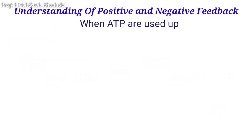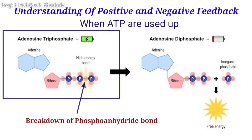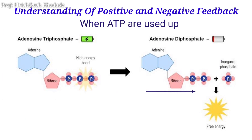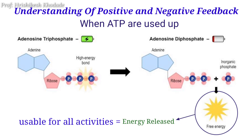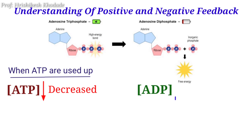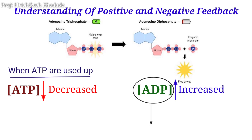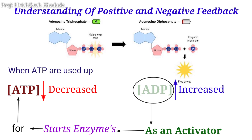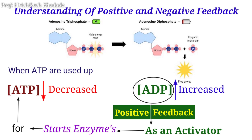And when ATPs are used, the breakdown of the phosphoanhydride bond between phosphate groups results in the formation of ADP and inorganic phosphate, releasing energy used by the cell for every purpose. When we say ATPs are used, that means ATP concentration decreases and ADP concentration increases. This increased ADP concentration acts in a positive way and activates those enzymes which are involved in respiratory processes. This means ADP concentration acts as a positive feedback agent.